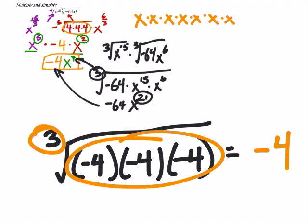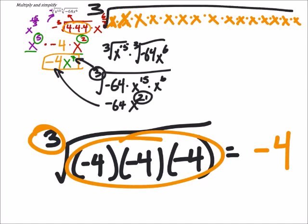What am I at? 5, 6, 7... 14, 15, whatever. 15 x's, and this is all being cube rooted. So, I need groups of 3, groups of 3 x's.